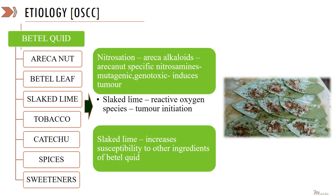Betel quid is an important etiological factor in the development of oral cancers. Betel quid is a preparation using betel leaf, areca nut, slaked lime, tobacco, catechu, spices, and sweeteners. The habit of consuming betel quid is predominantly practiced in South Asia and Southeast Asia. Consequently, the incidence of oral cancers related to betel quid chewing has been found to be higher in South Asia and Southeast Asia.